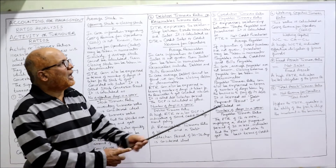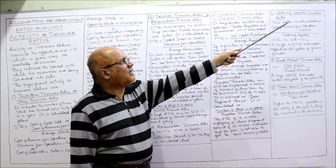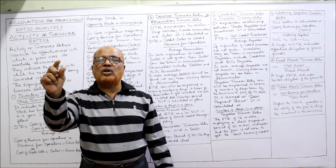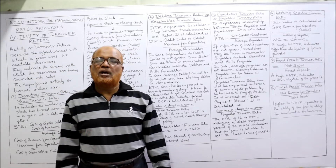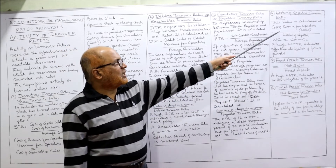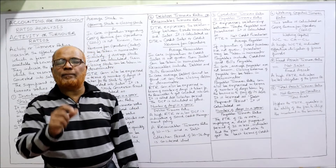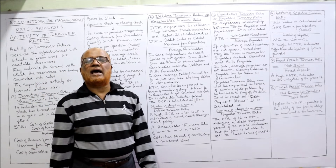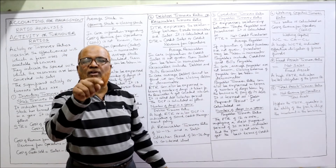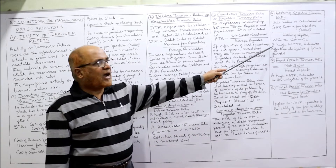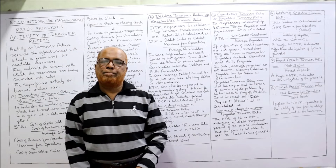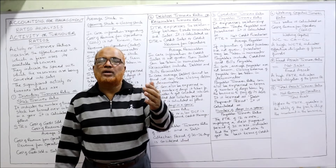The fourth ratio is Working Capital Turnover Ratio. The formula is: Cost of Revenue from Operations (or Cost of Goods Sold in old terminology) divided by Working Capital. Working Capital equals Current Assets minus Current Liabilities. A high working capital turnover ratio indicates effective utilization of the firm's funds.